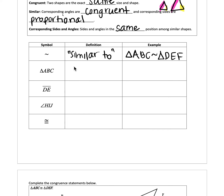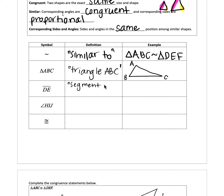The next symbol is the triangle symbol followed by three letters, pronounced as 'triangle ABC' or whatever letters follow. So if we have a triangle, triangle ABC would have points A, B, C as the vertices. The symbol of two letters with a line over them refers to a segment — segment DE, or more related to this unit, side DE. For example, in a trapezoid DEFG, side DE would be the segment between vertices D and E.